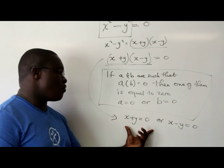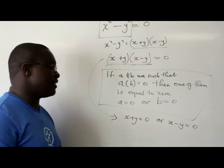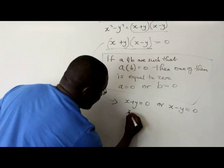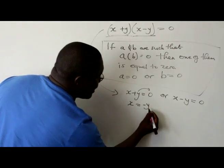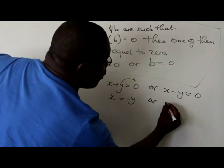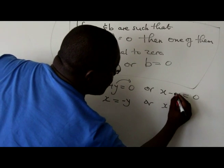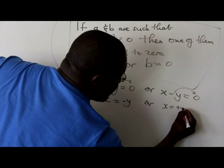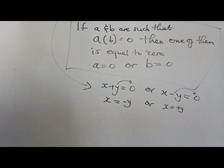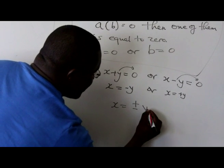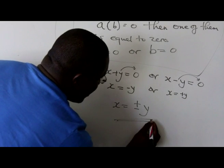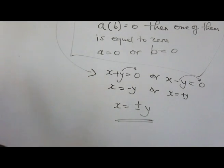Now, because we want to solve the equation, let's find the value of x. Taking y to the other side, x = -y, or x = y. So that means that your answer, x = ±y. So you have actually solved this equation.